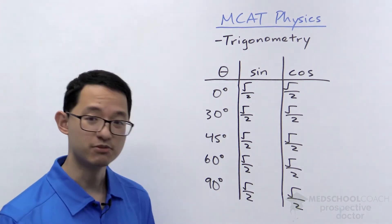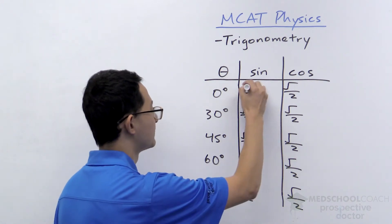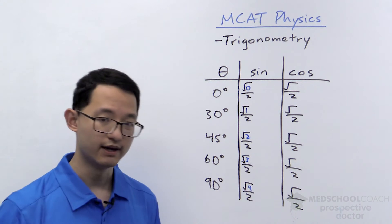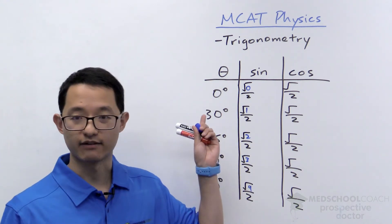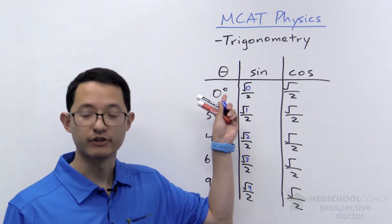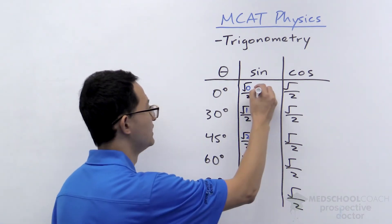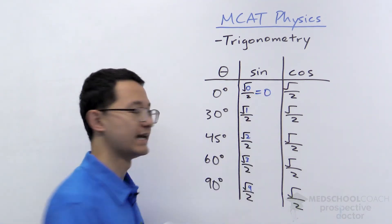All right. So that means for sine in the numerator, you're going to put 0, 1, 2, 3, 4. And now we can just calculate the values. The square root of 0 is just 0. So 0 over 2 is 0. So that means sine of 0 degrees is 0.